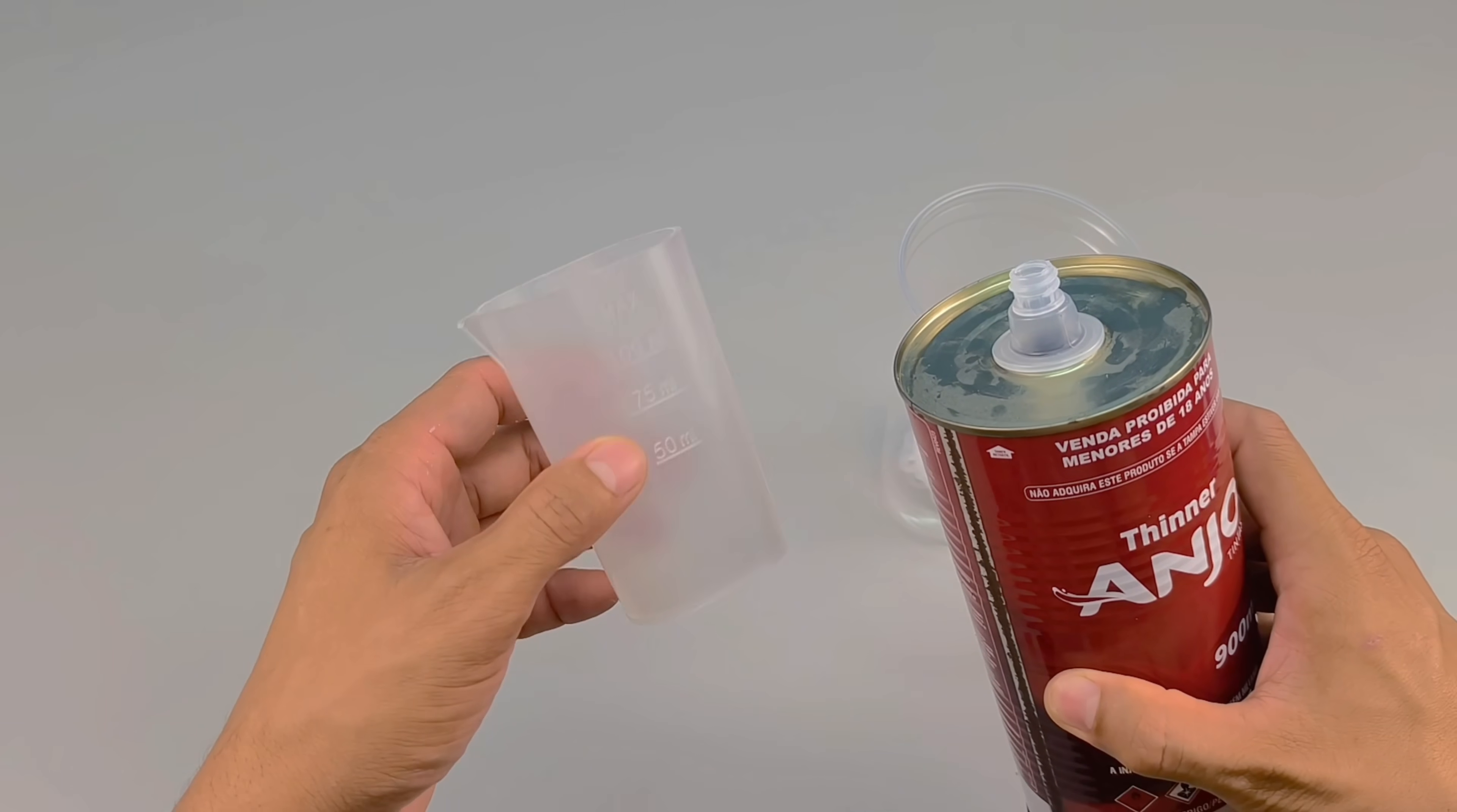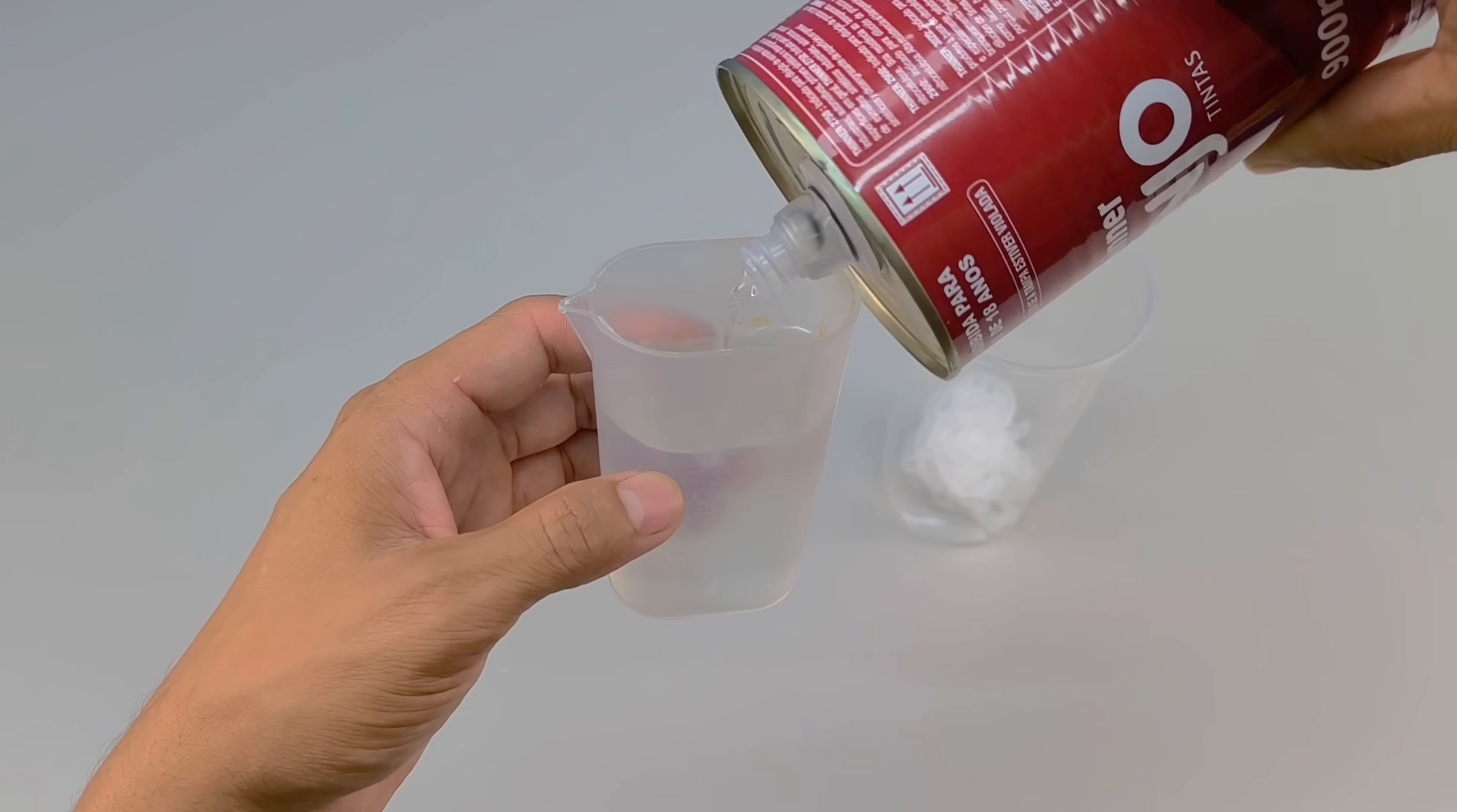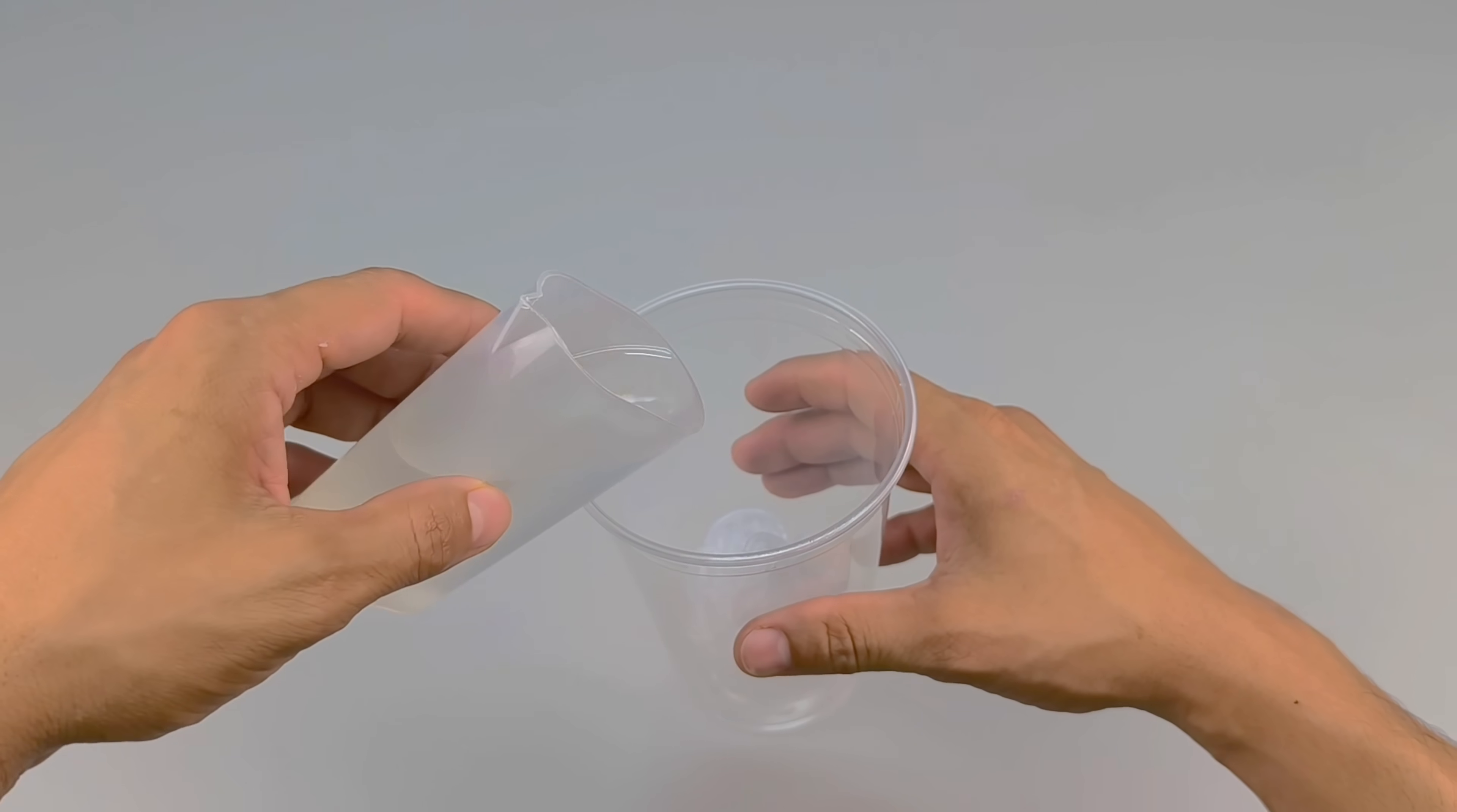This is where the second ingredient comes in: thinner, a powerful solvent. I measure out 100 milliliters, maintaining the ideal ratio. For every 50 grams of silicone, add 100 milliliters of thinner. This ratio is key to ensuring the mixture works properly.